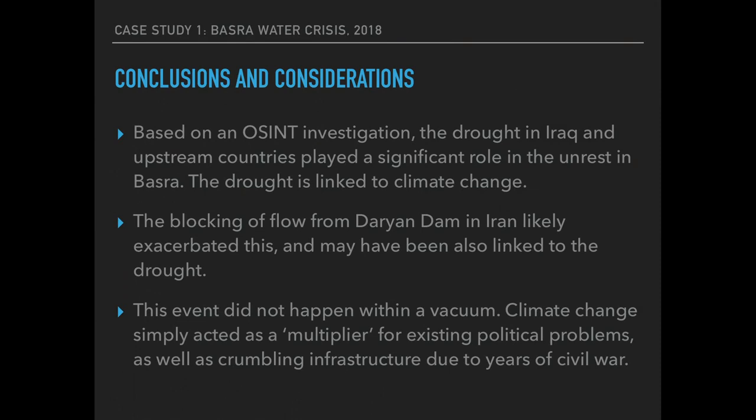What conclusions can we make from this case study? Through open source intelligence we can say that the drought in Iraq and upstream countries played a significant role in the unrest, and the drought itself is linked to climate change. Moreover, the blocking of flow from the Darian Dam in Iran likely exacerbated this, and indeed the closure of this dam was perhaps also linked to the overall drought — Iran was in the same drought conditions as Iraq. Finally, Iraq is a war-torn country with very weak institutions, divided across religious and ethnic lines, where even a small thing can act as a multiplier that catapults it into further violence. Within this context, it's more correct to say climate change played the role of a multiplier rather than an initiator.